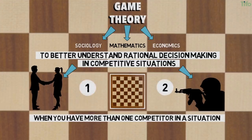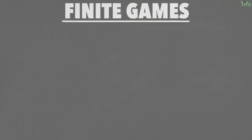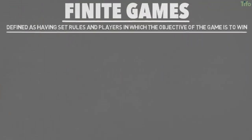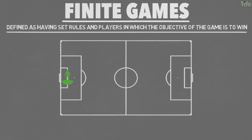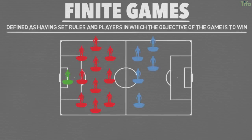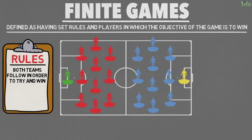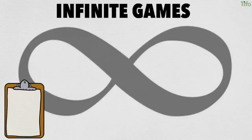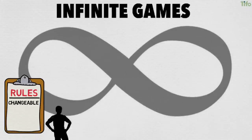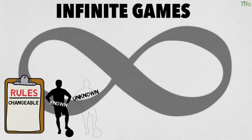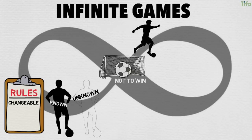There are two types of games: finite and infinite. Finite games are defined as having set rules and players in which the objective of the game is to win. An individual football match is a classic example — there are 11 known players on each team and set agreed-upon rules that both teams follow in order to try and win the match. In contrast, infinite games have changeable rules and both known and unknown players. Most importantly, the goal of the game is not to win, but to keep playing.